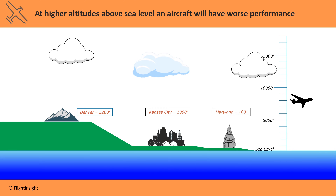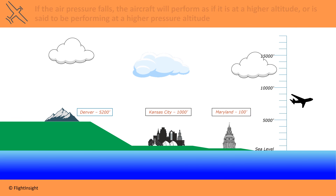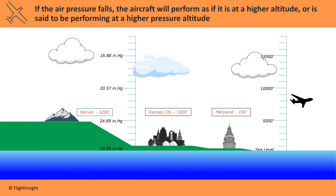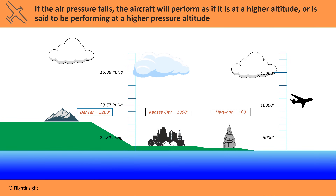If the aircraft climbs, it will perform worse, so the true altitude is a determining factor of performance — here it is at 8,000 feet. Now if the pressure falls or is lower than the standard 29.92 inches of mercury at sea level, the aircraft will perform not as though it were at 8,000 feet, but as if it were at say 11,000 feet under that standard model. In that scenario where pressure and temperature are held constant, this aircraft would behave as if it were at 11,000 feet. This is its pressure altitude.